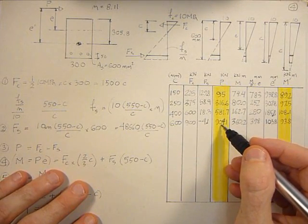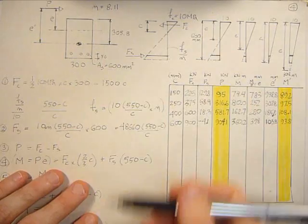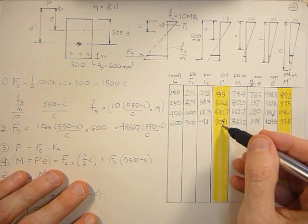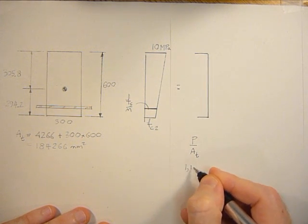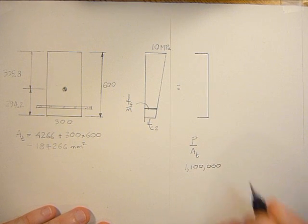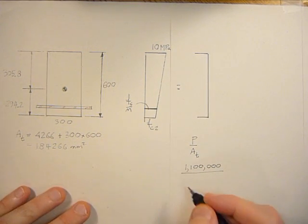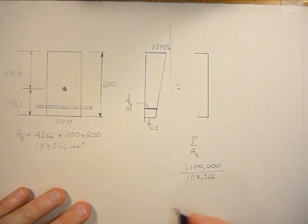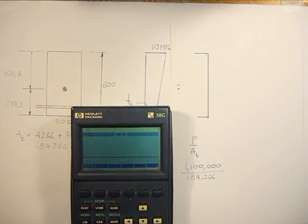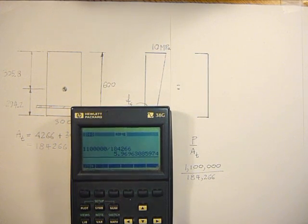So what we can do is we can just take a value of P, anything that's higher than 904.1, because we know that the neutral axis, when it goes lower, is increasing the axial load. So we'll take an axial load of 1100 kilonewtons. 1,100,000 newtons divided by this area, E to the third divided by 184,266, the area, and that gives us 5.97 MPa.